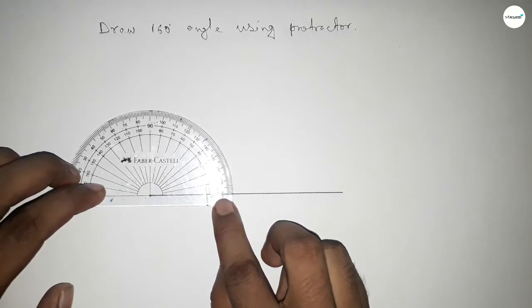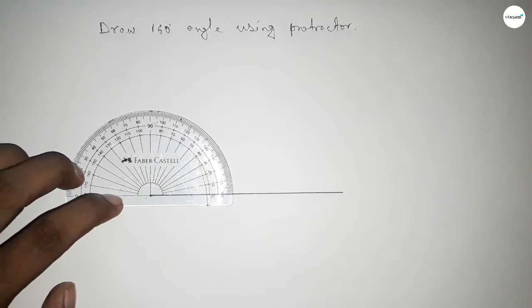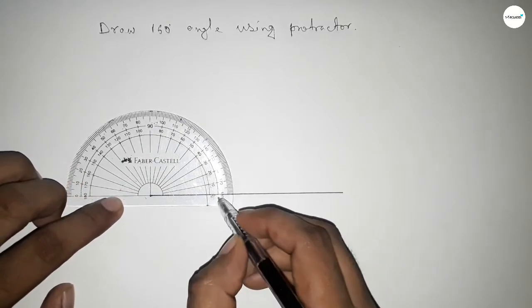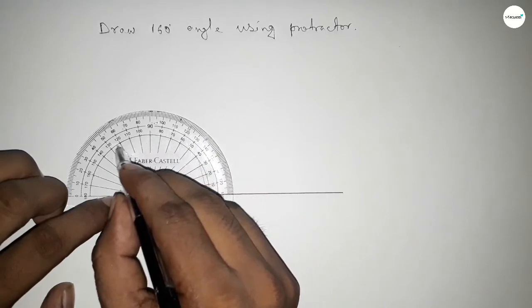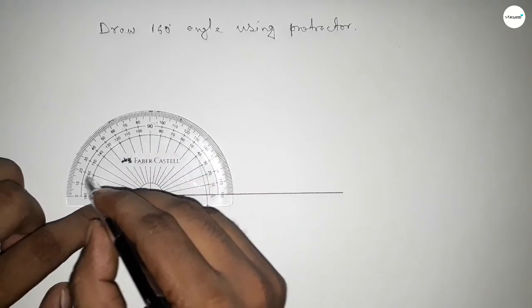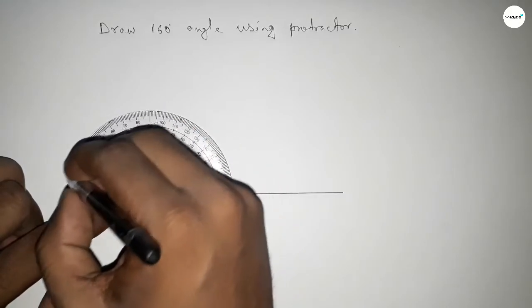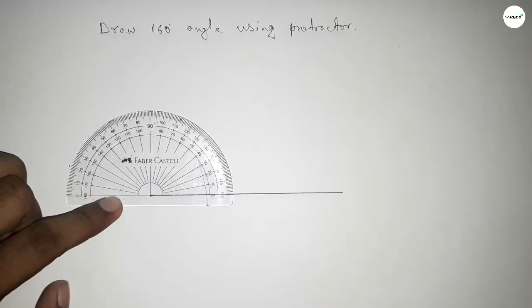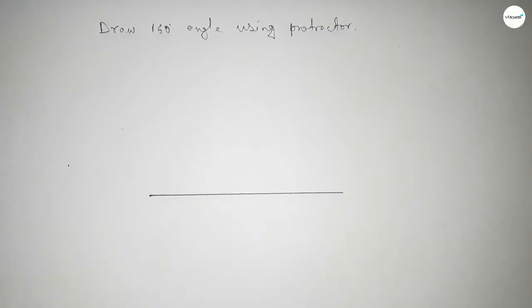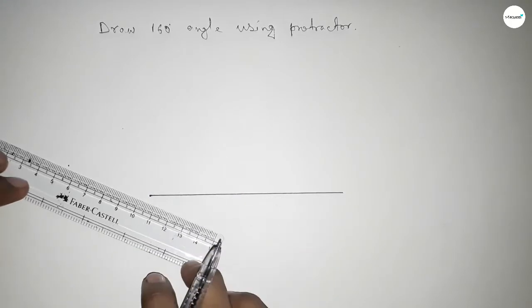Then count the angle starting from 0: 10, 20, 30, 40, 50, 60, 70, 80, 90... up to 160 degrees. This is 160 degrees. Now join this side.